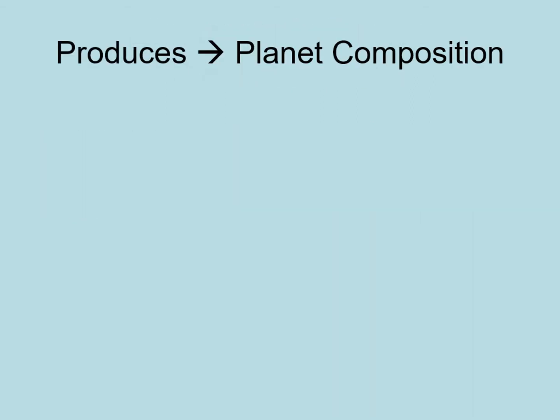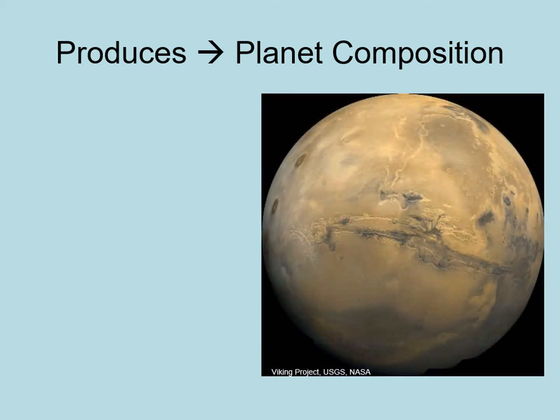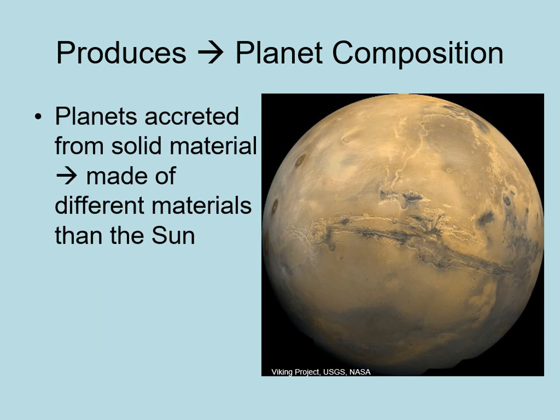The solid body accretion step lets us understand another one of the observations about the solar system: the composition of the planets. As we saw, planet compositions don't match the composition of most things in the universe. There's too much heavy material compared to hydrogen and helium. However, if planets form from the accretion of solids, then this makes sense.